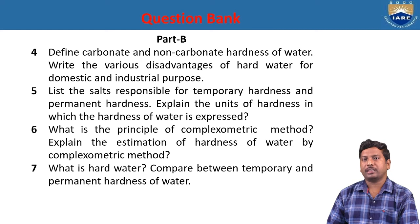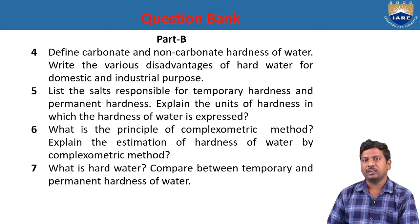What is the principle of the complexometric method? The principle is the formation of a complex: chelating agent EDTA reacts with the metal ion to give a metal-EDTA complex. The hardness-causing ions calcium and magnesium are alkali earth metals present in Group 2 of the periodic table and have the tendency to form complexes with EDTA. From this, we determine the amount of hardness present in the water.